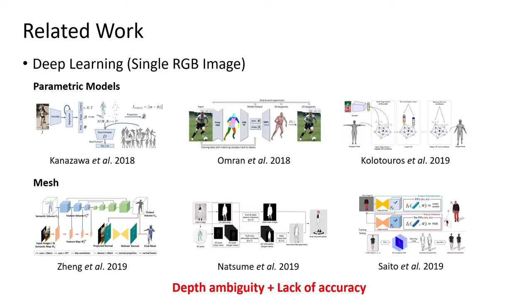In the related work, we will talk about three categories of 3D human reconstruction. The first category is the learning-based method. These methods infer a parametric model or body mesh from a single RGB image. However, these methods suffer from depth ambiguity and lack accuracy.